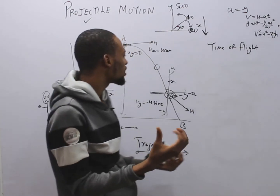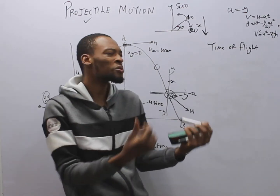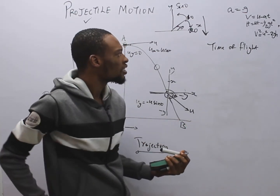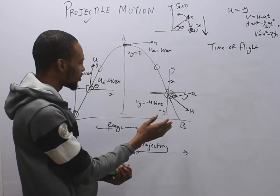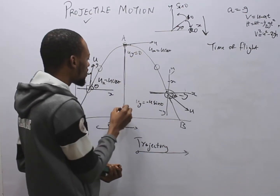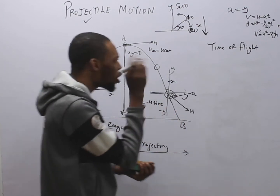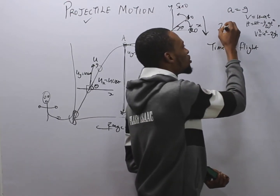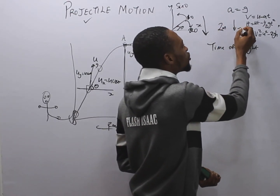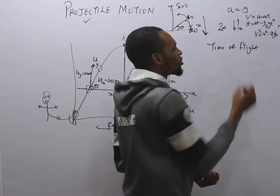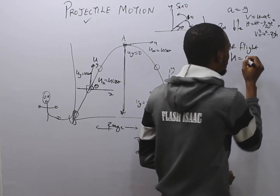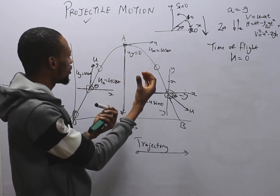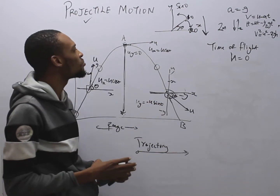Time of flight is the total time it takes for the body to go up and come down. Since the body returns to the same level, the net vertical displacement is zero — the upward and downward displacements cancel. So we set h = 0 when calculating time of flight.